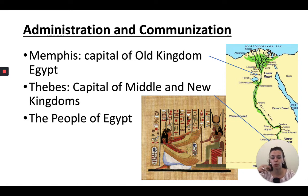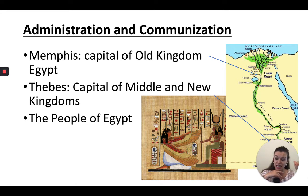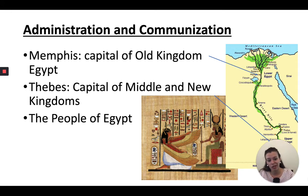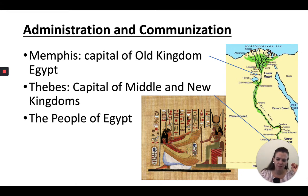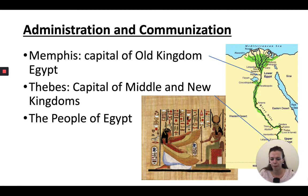Egypt is more interested in controlling resources than conquering territory. The people of Egypt have distinct social classes: at the top you have the king, priests, and high-ranking officials; then lower-level officials; then peasants, which make up most people. There are actually two writing systems in ancient Egypt — hieroglyphics, and a cursive script that was easier to write. There is no formalized class structure in Egypt like they had in Mesopotamia. Women could own and inherit property, and marriage was monogamous but could be easily established and dissolved — more like a significant relationship.